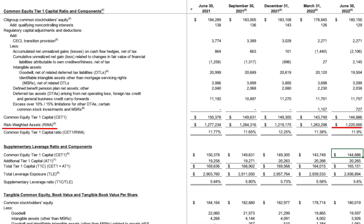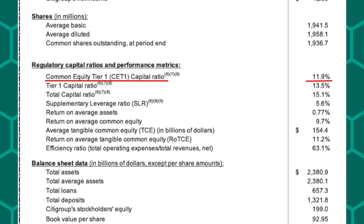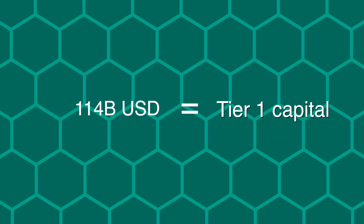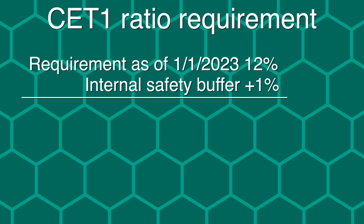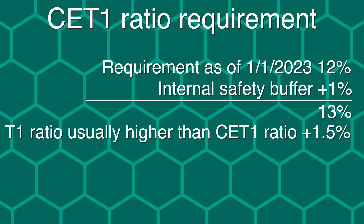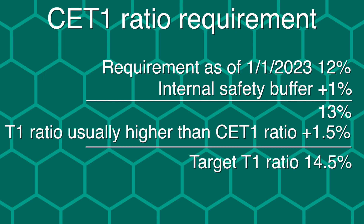To start this calculation, we need to get some baseline values. As of the second quarter of 2022, Citigroup has their risk-adjusted assets sitting at $1.2 trillion and their Tier 1 Capital Ratio at 11.88%, giving a Tier 1 Capital of $144 billion. As of the most recent Federal Reserve requirements, Citigroup's required Common Equity Tier 1 Capital Ratio has been raised to 12% for March 2023. Citigroup's management currently has an internal target of 1% above the regulatory requirement as a safety buffer, making the internal CET1 Ratio 13%. Based on historical values, the Tier 1 Capital Ratio is usually 1.5% above the CET1 Ratio, so I have estimated the target Tier 1 Capital Ratio for Citigroup to be 14.5% for the next financial year.